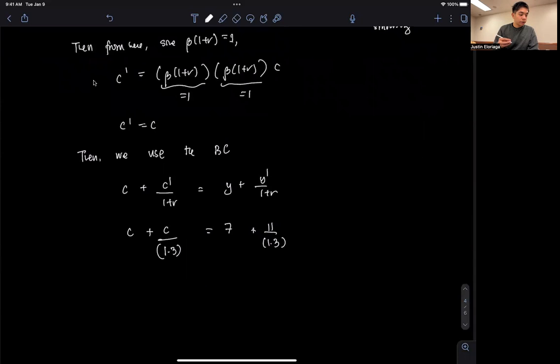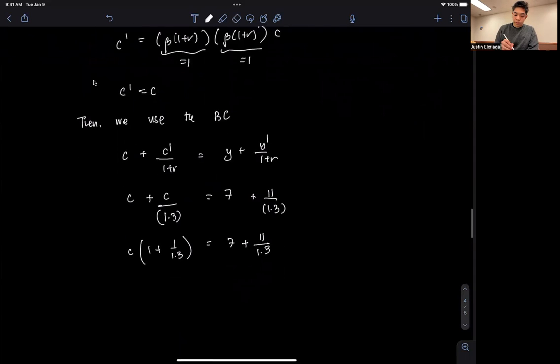And we can factor it out, so we get C times 1 plus 1 over 1.3, equals 7 plus 11 divided by 1.3. And if we solve for C, so we do 7 plus 11 over 1.3, divided by 1 plus 1 over 1.3, and if we solve this, we get 8.73913043.